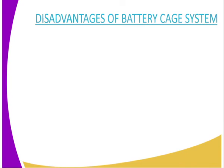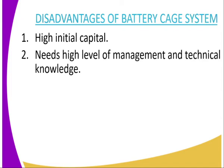We go to the disadvantages of the battery cage system. Number one, high initial capital is required. Remember, in order for you to secure one cage, it is very, very expensive, and that is why this is a disadvantage because many farmers will not be in a position to afford it.